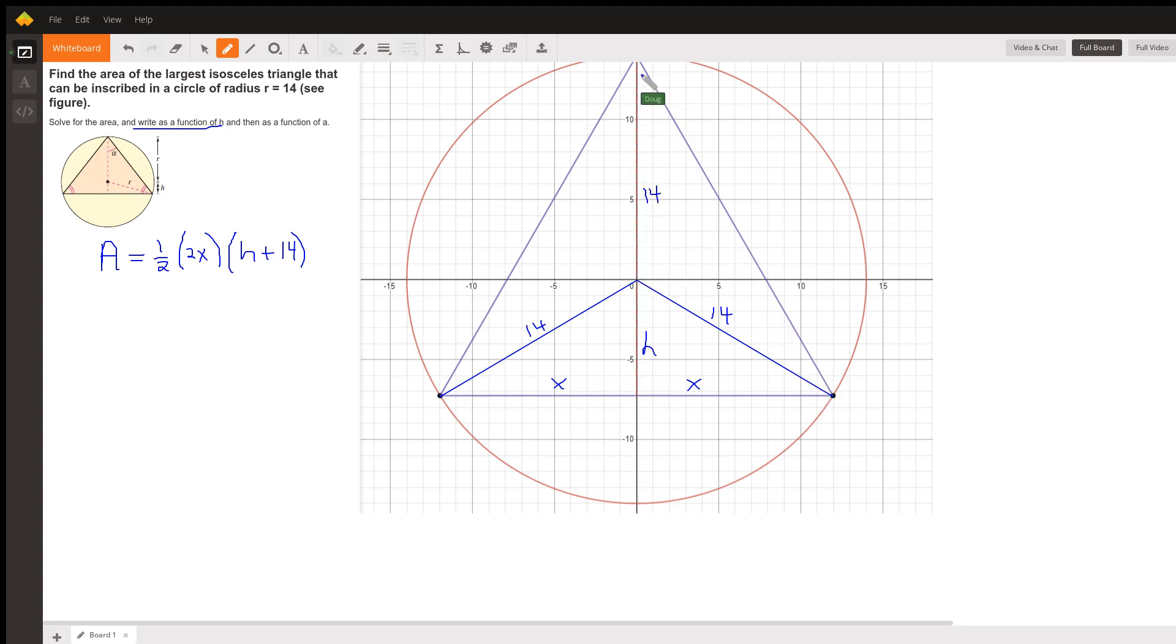The circle has a radius of 14, and I've drawn in this base of the isosceles triangle and labeled its two, the bisected base as having components X and X, and this distance right here is the H that we're talking about. So, the area of the isosceles triangle is one-half the base, which is 2X, times the height, which is this 14 plus this H.